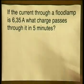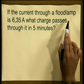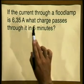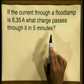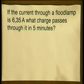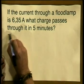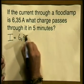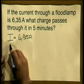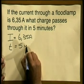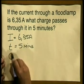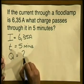Now let's try another problem. If the current through a flood lamp is 6.35 amperes, what charge passes through it in 5 minutes? Again, let's organize our information. Current i is equal to 6.35 amperes. The time is again given in minutes, and q, the charge, is what we're trying to find out. We've got a problem in that they've given us time in minutes, so we must convert 5 minutes into seconds.